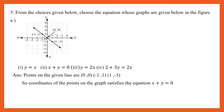Question number 5. From the choices given below, choose the equation whose graphs are given in the figure. You are given the graph and 4 equations, and we have to select which equation satisfies the given graph. From graph A, we can see the solutions are (negative 1, 1), (0, 0), and (1, negative 1). The 4 choices are y equal to x, x plus y equal to 0, y equal to 2x, and 2 plus 3y equal to 2x. Since the coordinates satisfy x plus y equal to 0, that is the correct equation.